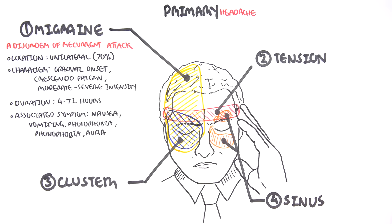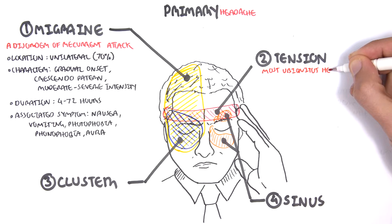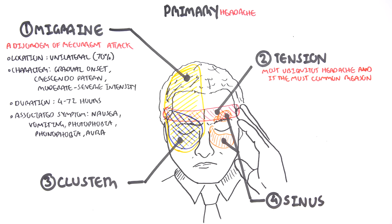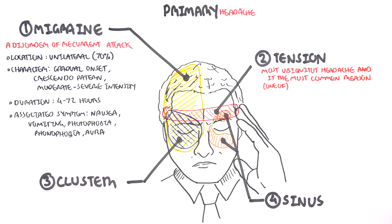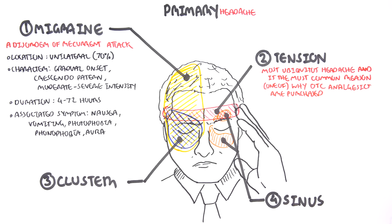Then you have the tension headache. Tension headache you can think of as being more muscular. It's the most ubiquitous headache and is the most common reason why over-the-counter analgesics are actually bought. This is the most common headache essentially.